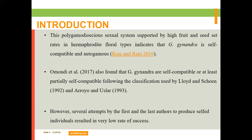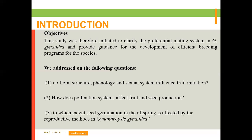However, we tried several attempts to self individual plants for this species, but it resulted in very low rates of success. This helped us to initiate a clarification to see what is the preferential mating system in Gynandropsis gynandra and provide guidance for the development of an efficient breeding program for the species. We addressed the following questions: Do floral structure, phenology, and sexual system influence fruit initiation? How does the pollination system affect fruit and seed production? To what extent does seed germination in the offspring get affected by the reproductive method in Gynandropsis?